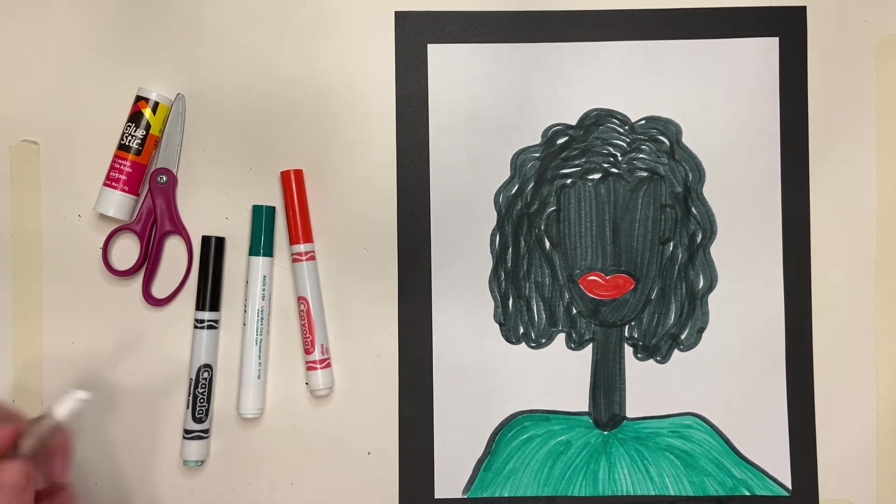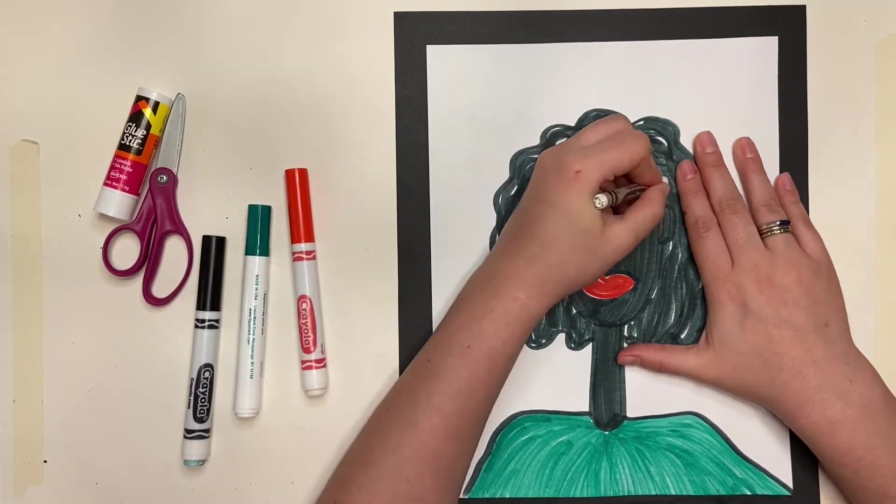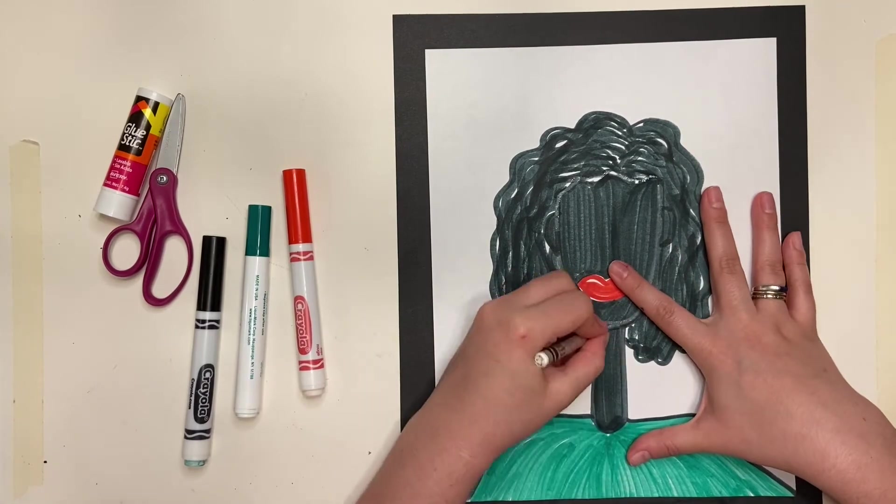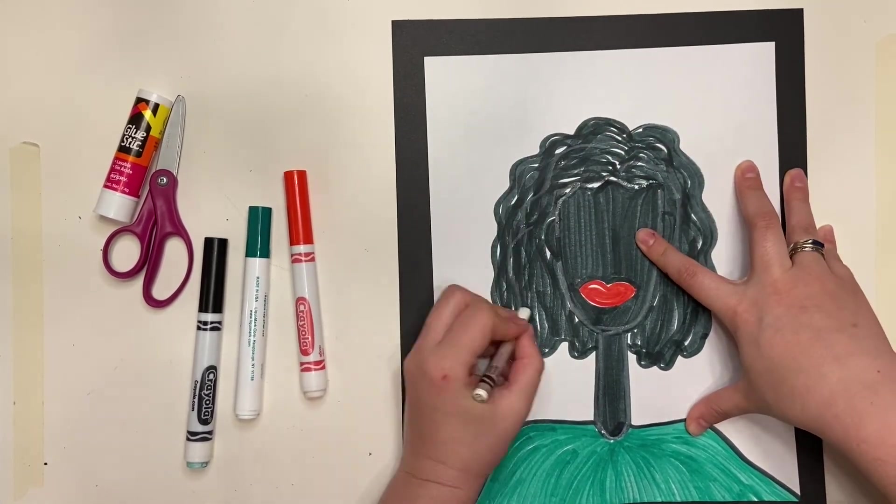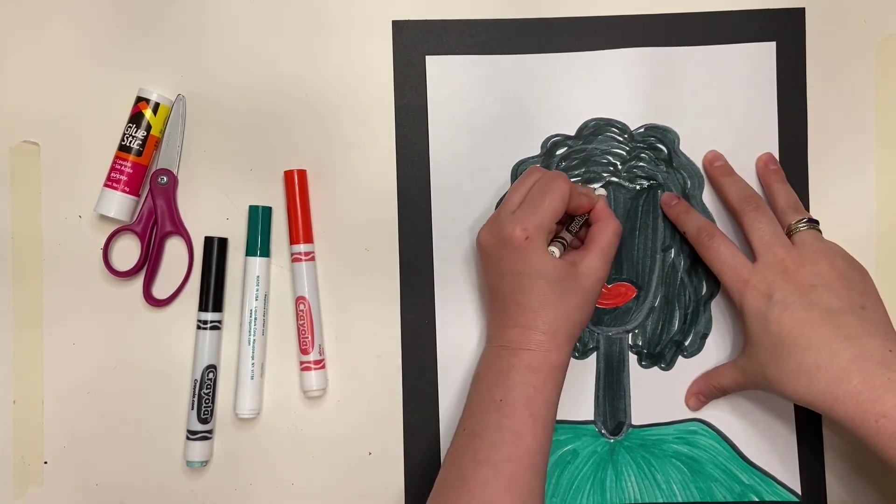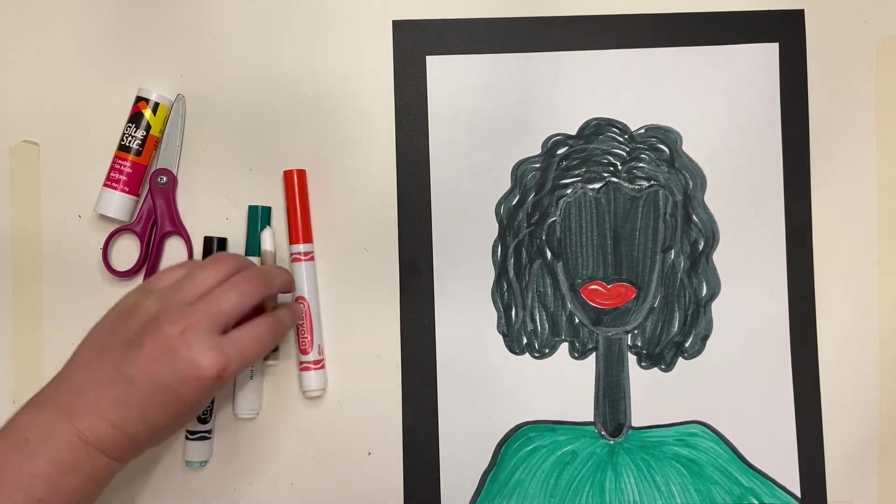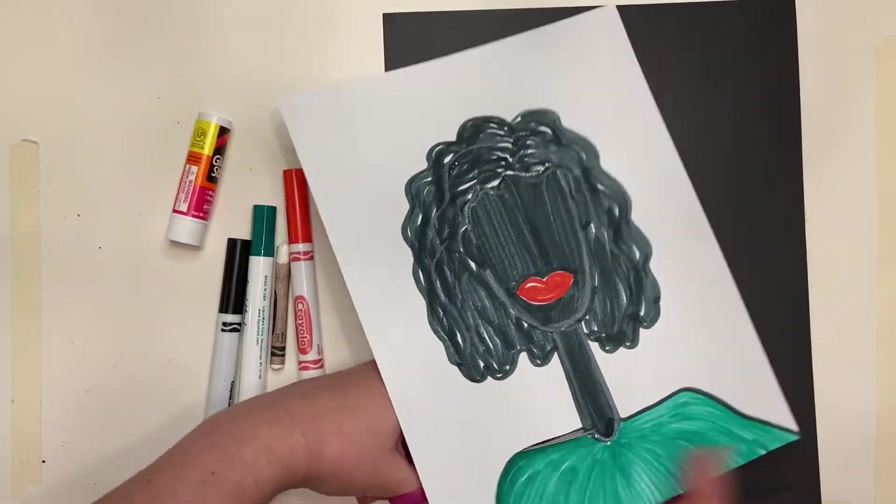Using a white crayon, I'm going to again outline my face, outline the hairline, and the neck. It may not stick out as much as on the black paper, but you'll still be able to see it if you press down hard and go over it a few times. Time to cut your silhouette out!